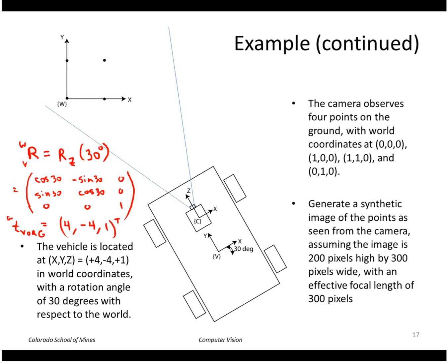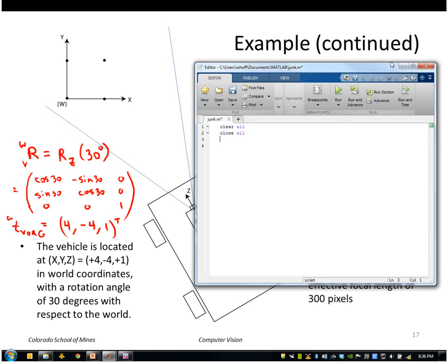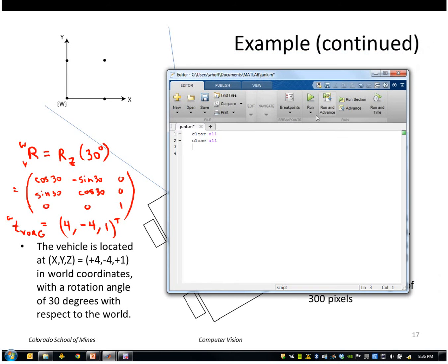Alright, so let's go ahead and start making a MATLAB script to do this. So I'll say rotation from vehicle to world is cosine, and I'll use the cosd form of this which takes degrees, and sind. So that's cosine minus sine, sine, and cosine.